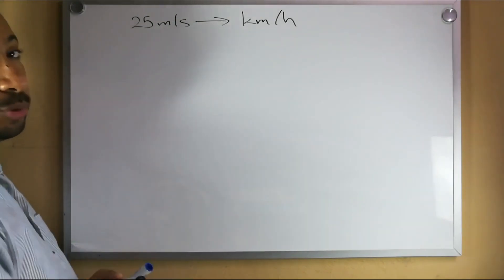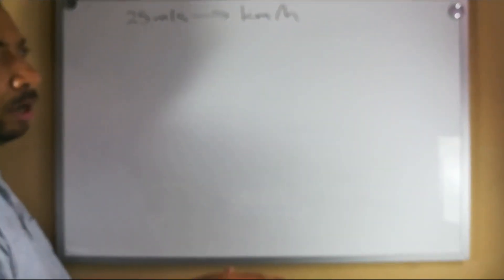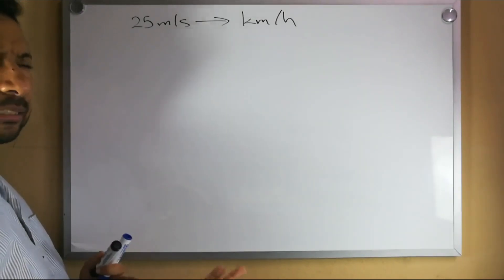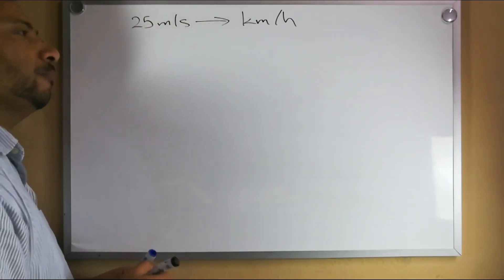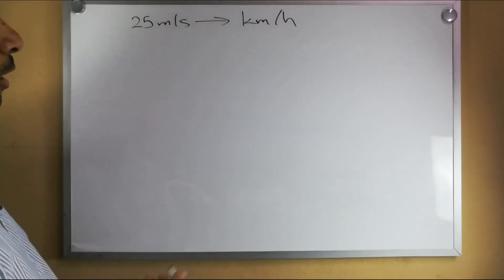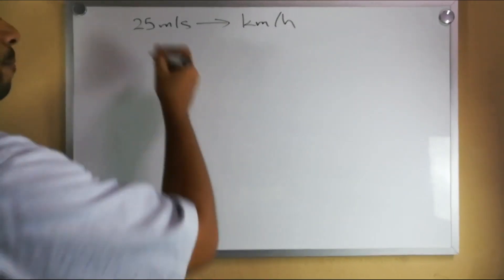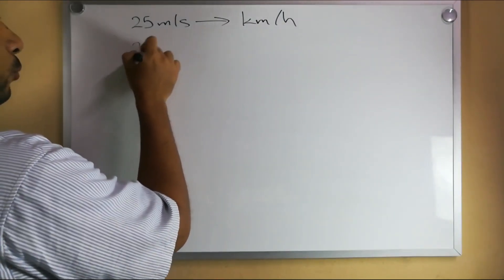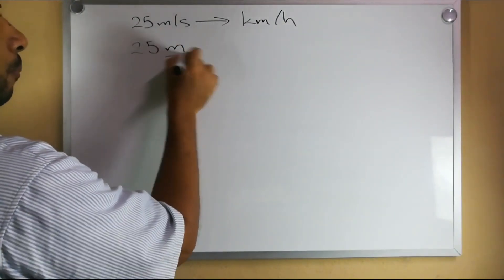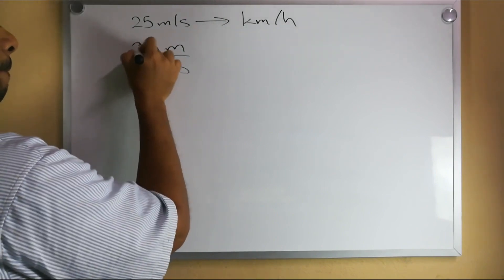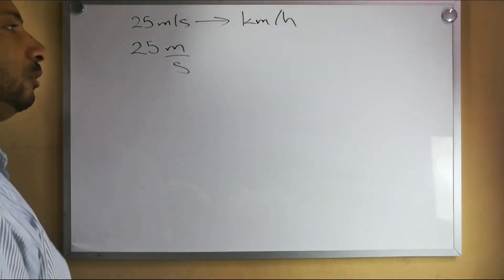You would multiply times 3.6, that's the long and short of it. But why is it that you multiply times 3.6? Let's look at a strategy of doing these conversions that works no matter what the units are. Let's say we have 25 meters per second and we want to convert that to kilometers per hour.